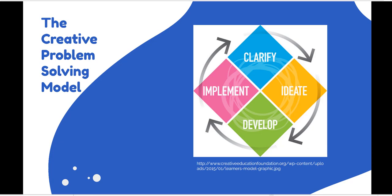Problem solving starts with the clarify step — essentially understanding the issue that needs to be addressed. It then moves to ideate, which is how we come up with the best solutions. Next, we take those best solutions from the ideation phase and make them even better in the development process. We usually select one final solution, which we then implement — putting that particular solution into action.